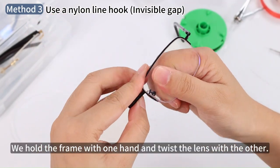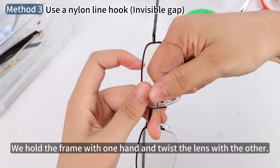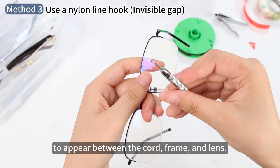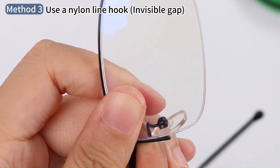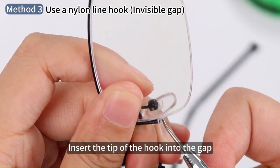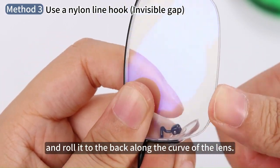We hold the frame with one hand and twist the lens with the other. Twisting will create a small gap between the cord, frame, and lens. Insert the tip of the hook into the gap and roll it to the back along the curve of the lens.